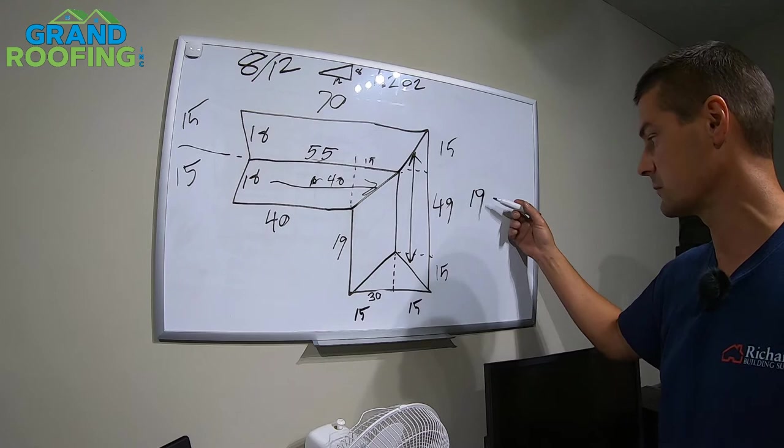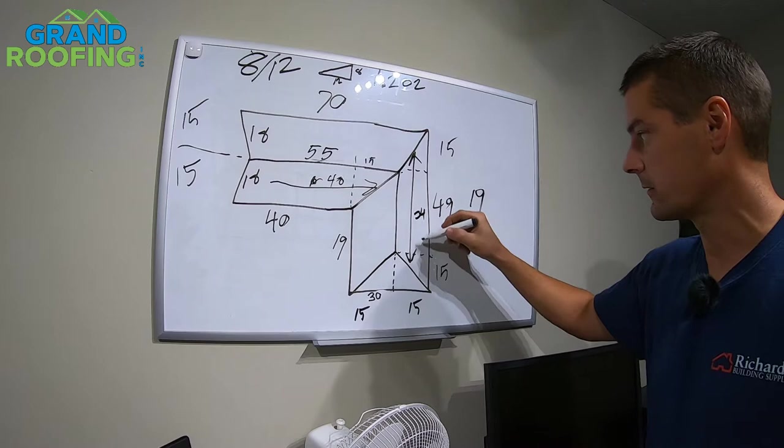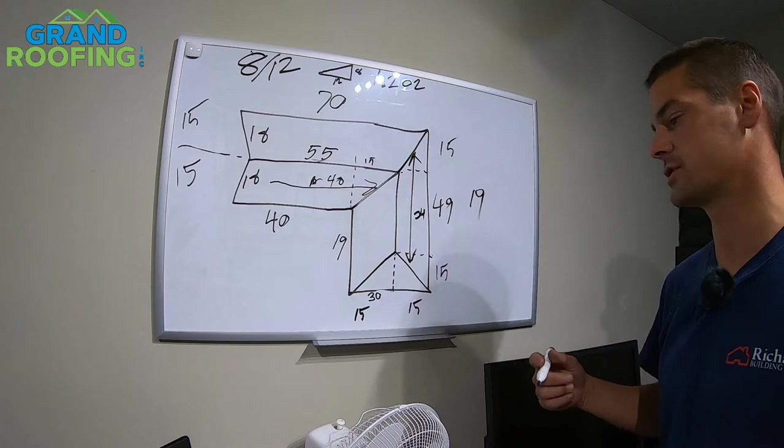What's that going to be? If you take this center section of 19 feet and you add 15 to it, that's going to be 34. So you've got 34 feet in the middle here. Take your height, 18 times 34 gives you a square edge on that section.